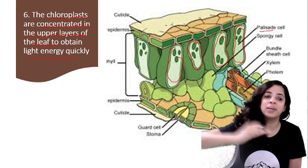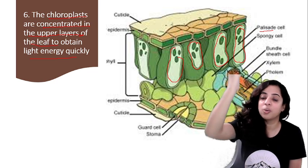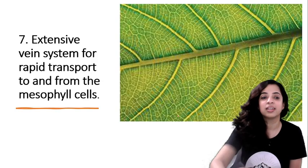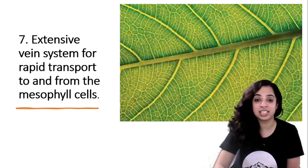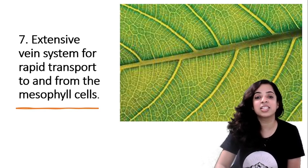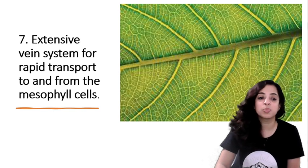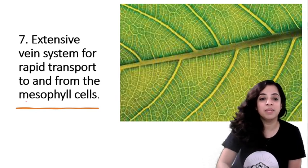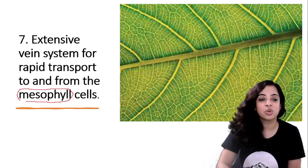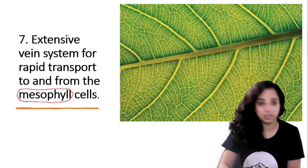The last point is extensive vein system. Can you see in the leaf there is extensive vein system for rapid transport to and from the mesophyll cells? We know photosynthesis happens in mesophyll cells, so there is an extensive vein system.